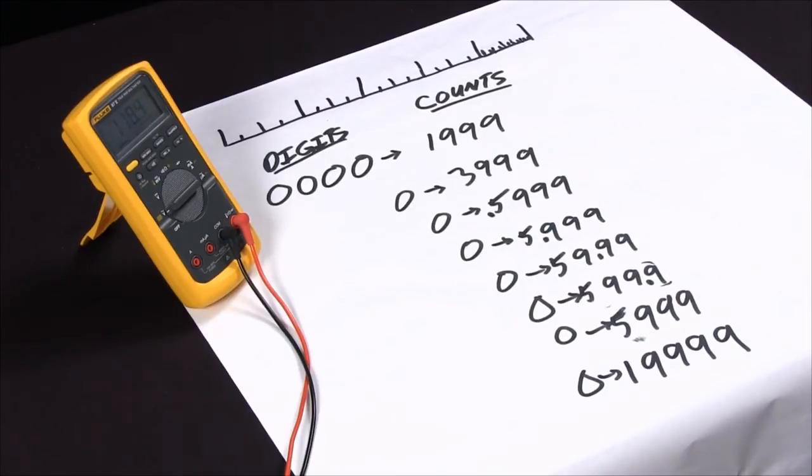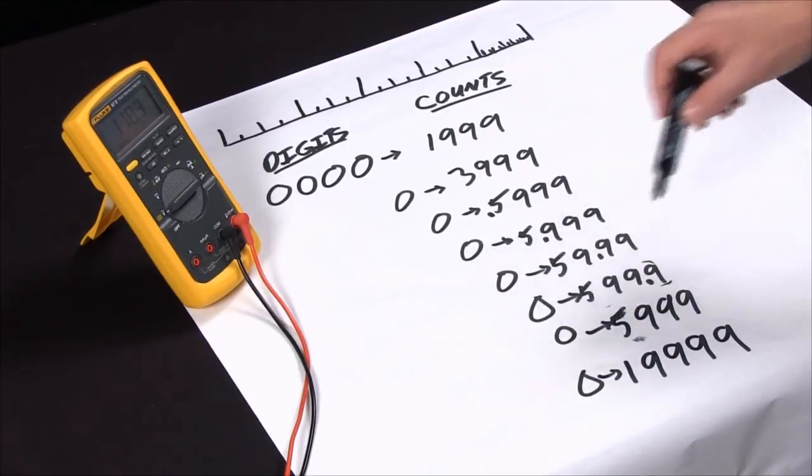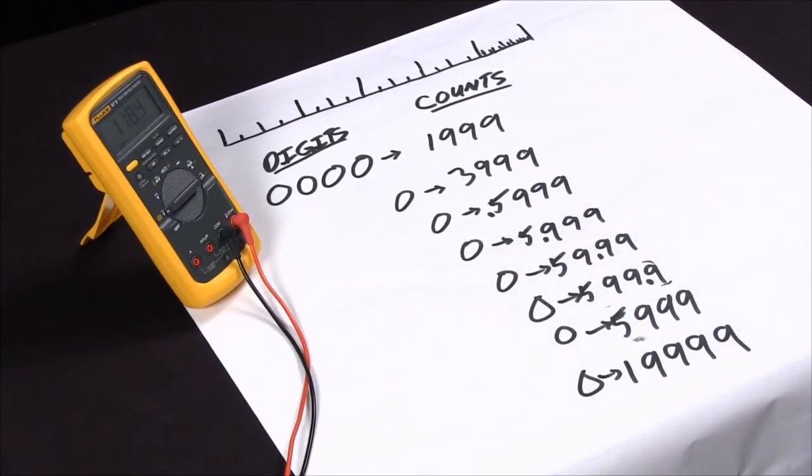So to find the resolution on a meter, simply find the number of counts and start marching a decimal point through it and you'll see what your resolution is on a particular range.